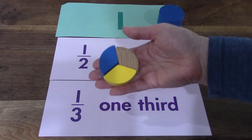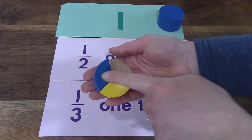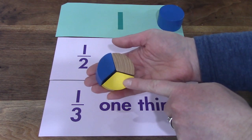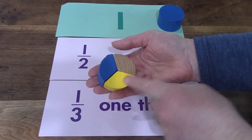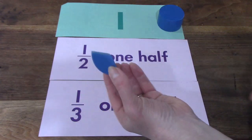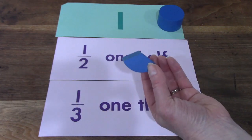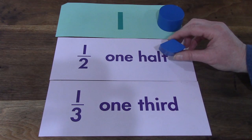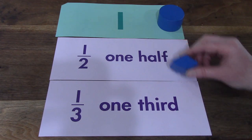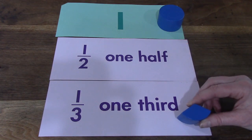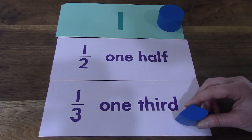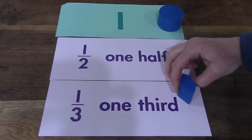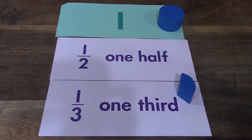What about this one? It has one, two, three parts. If I took one out of the three parts, would that be one-half or one-third? You're right. It would be one-third.